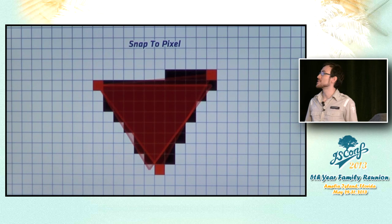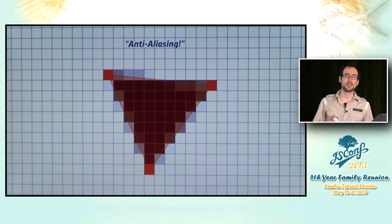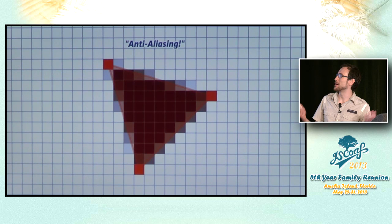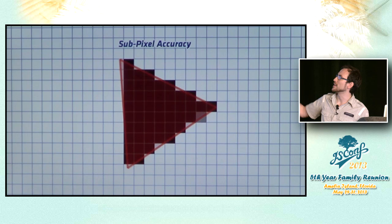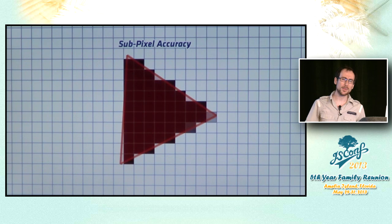How do we solve this? You might be thinking of anti-aliasing — but no. Look at this beautifully anti-aliased triangle that's still jerking around in an ugly fashion. What we actually want is something called subpixel accuracy, which looks smooth even though it's aliased with only black and white and jaggies — the corners of the shape can be placed anywhere.